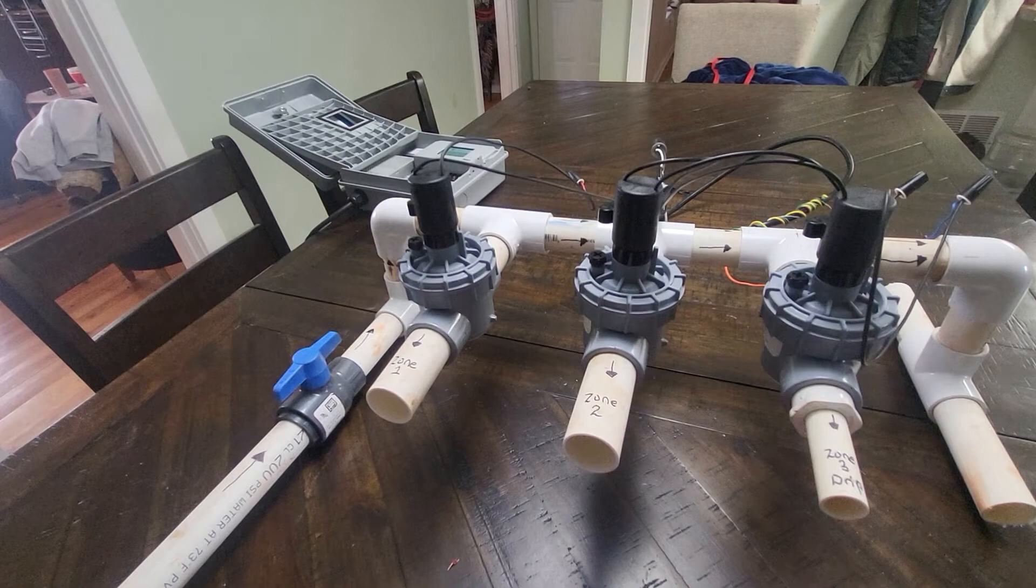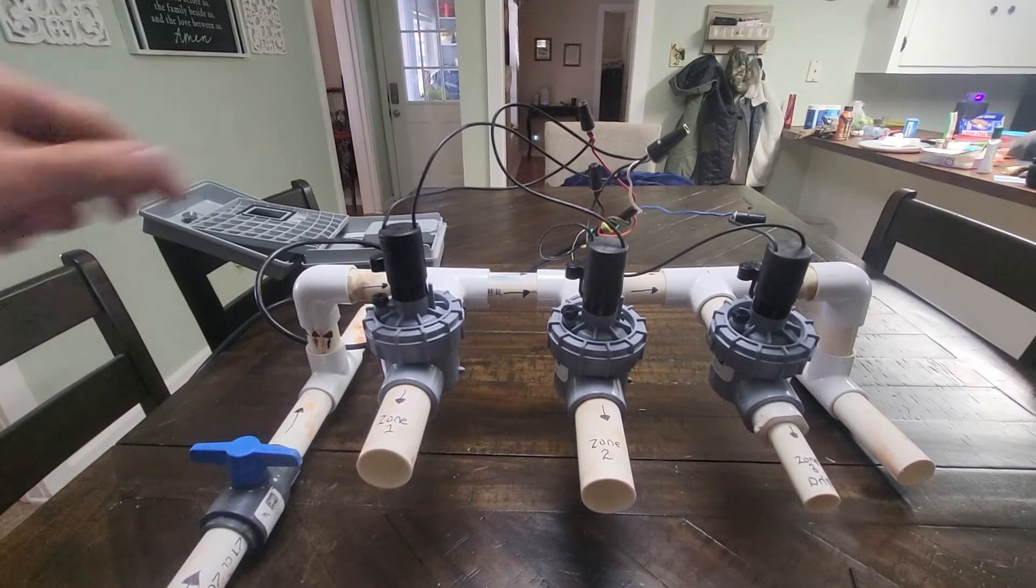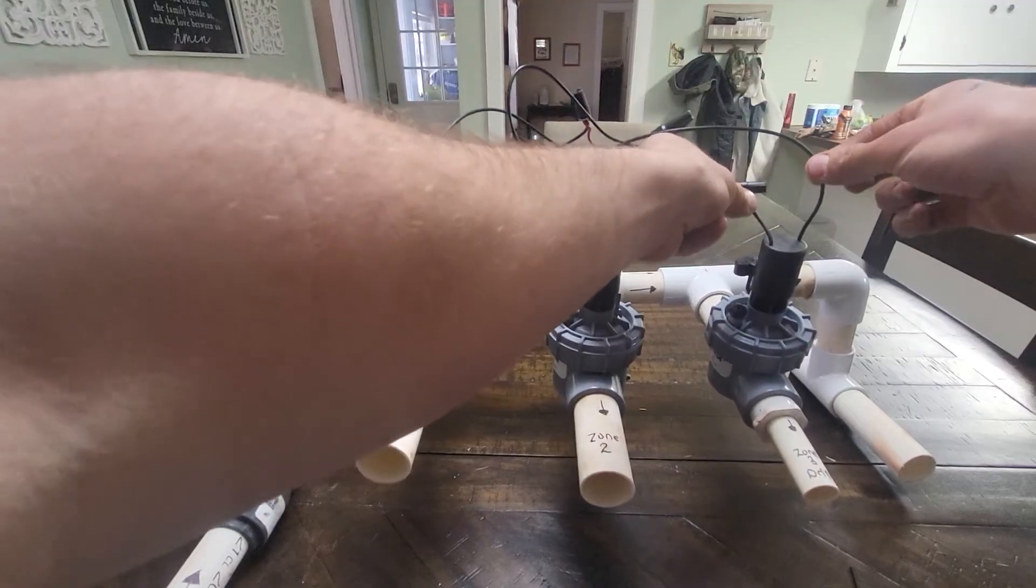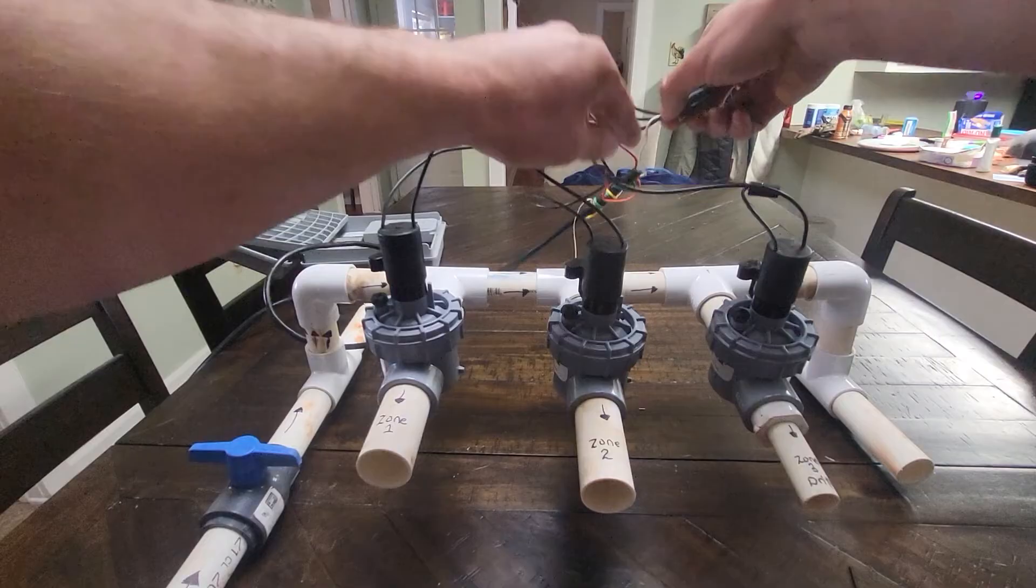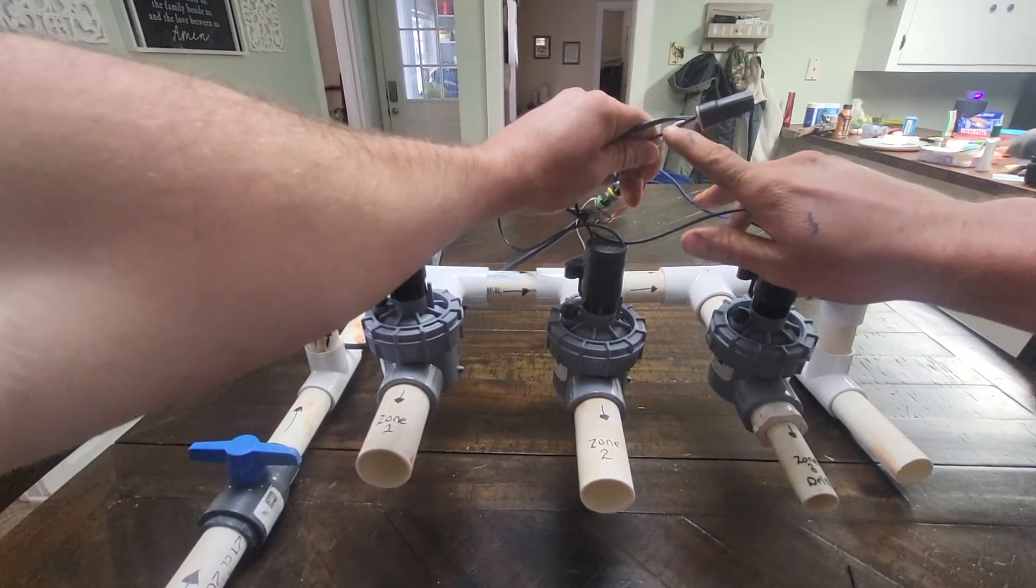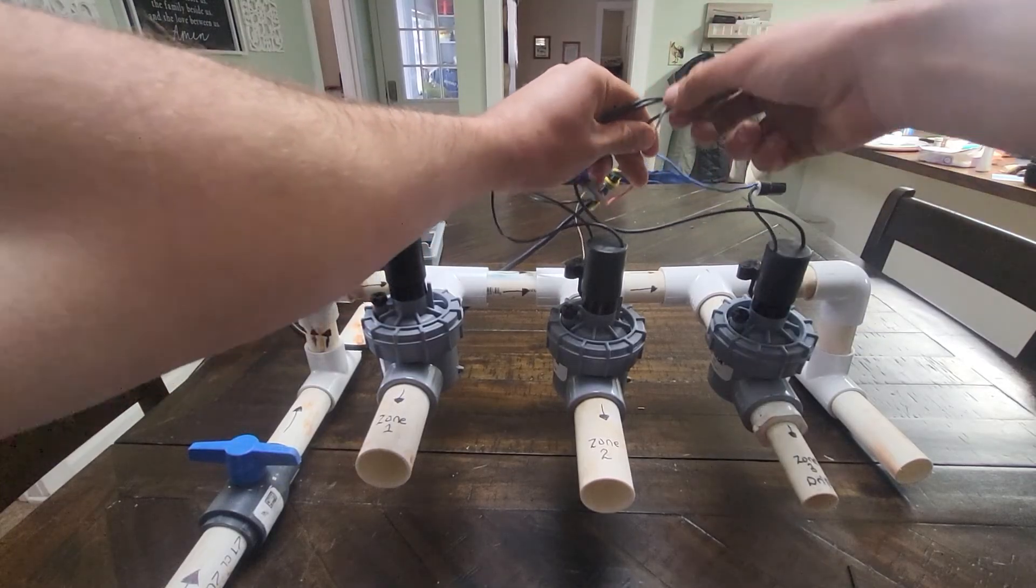The final way we can turn a valve on is from the controller. Each solenoid has two wires coming off of it. The common, which is the white wire, is connected to every valve/solenoid.